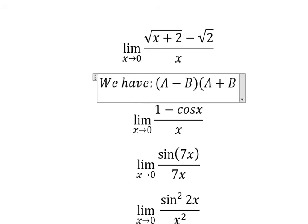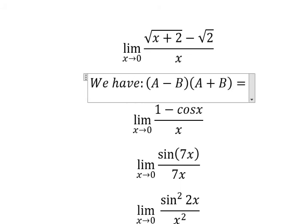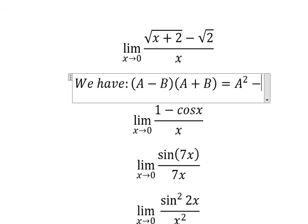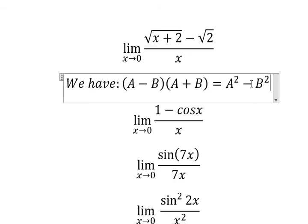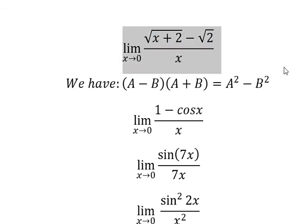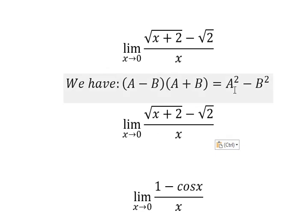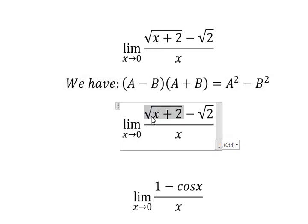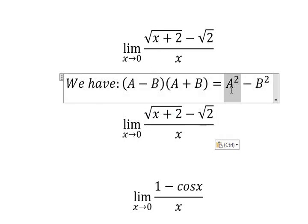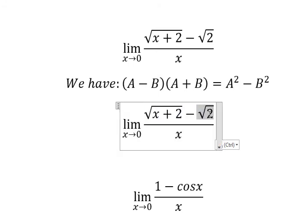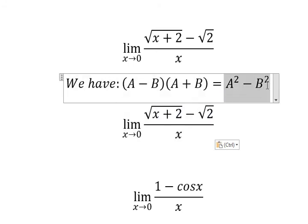We use this formula because we want to cancel the square root — that's why we need to have the power two in here. Since we have a minus b form, we need to multiply by a plus b on both the numerator and denominator.